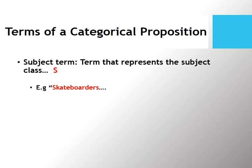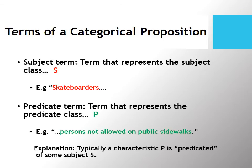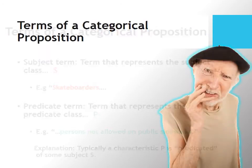What all these examples have in common is that each has a subject term representing the subject class. For example, in the skateboarders illustration, it was the class of skateboarders. Then you have a predicate term — a term representing the predicate class — something you predicate of your subject, such as persons not allowed on public sidewalks. Typically, a characteristic or property P is being predicated of some subject in each case.